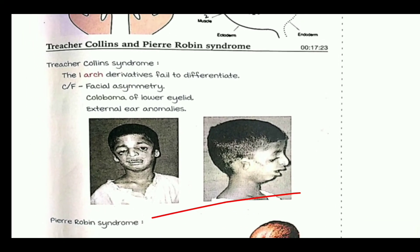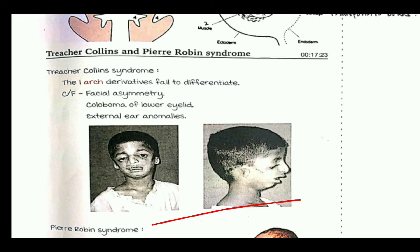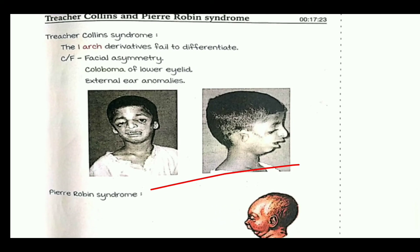Two important clinical syndromes related to pharyngeal arches are Treacher Collins syndrome and Pierre Robin syndrome. In Treacher Collins syndrome, the first arch derivatives fail to differentiate. The clinical features include facial asymmetry, coloboma of the lower eyelid, and external ear anomalies as seen in the diagram.